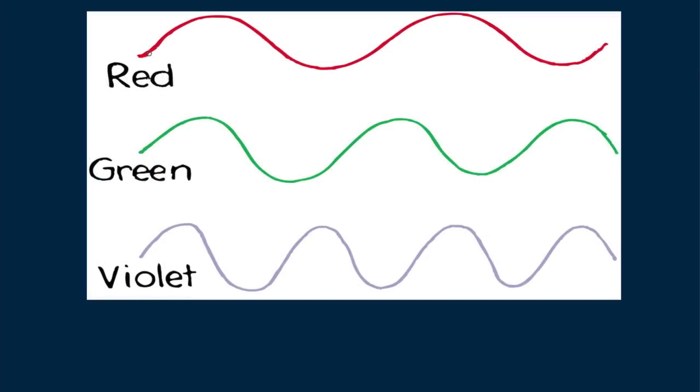The lowest frequency visible light appears red, the medium green, and the highest frequency appears violet, and these waves are nearly twice the frequency of red light.